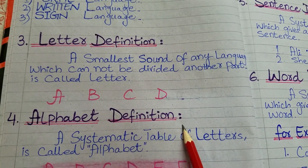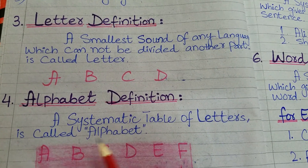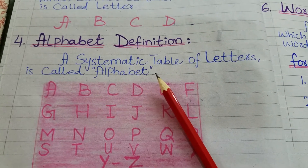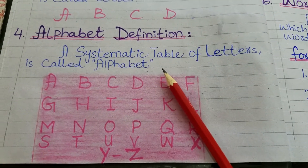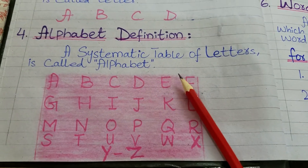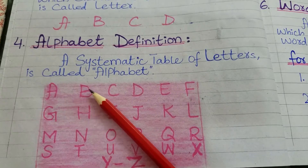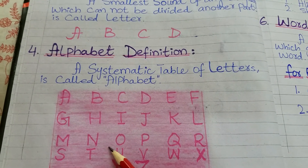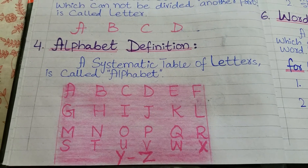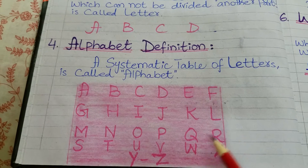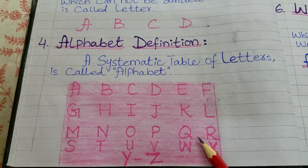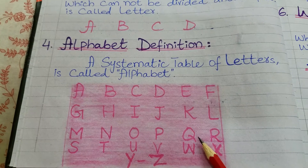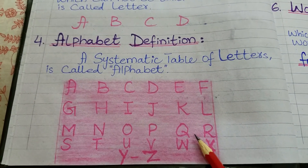Alphabet definition — huruf-e-tahajji ki definition. A systematic table of letters is called an alphabet. The systematic table of letters is what we call an alphabet. The total number of English alphabets is 26: A, B, C, D, E, F, G, H, I, J, K, L, M, N, O, P, Q, R, S, T, U, V, W, X, Y, Z. Just as flowers are strung together in a garland, in the same way the alphabet is like a garland — a garland of letters.